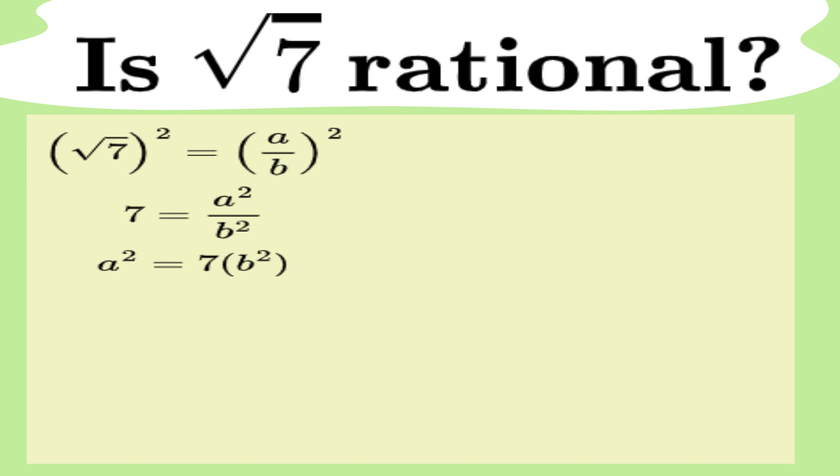At this point, we don't have a contradiction just yet, but we're starting to set up the pieces for one. Now, let's take a step back and look closely at what we've got. We've got a squared equals 7 times b squared. That means a squared is divisible by 7, right? And this is where things start to get interesting.